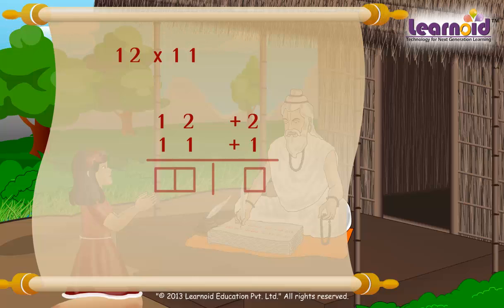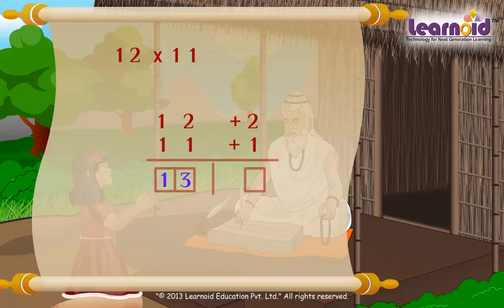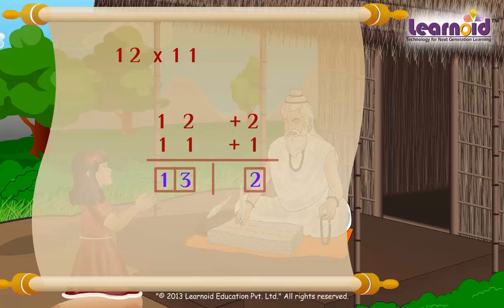We will do cross addition in this case. 12 plus 1 or 11 plus 2 equals 13. We will write 13 on the left. To find the right digit, we will multiply vertically: 2 into 1 equals 2. So 12 into 11 equals 132.